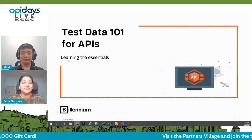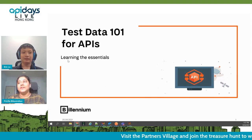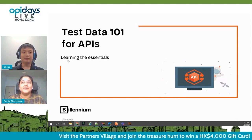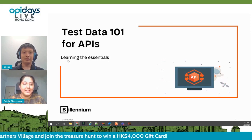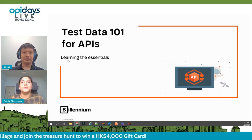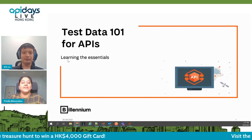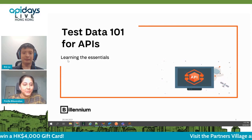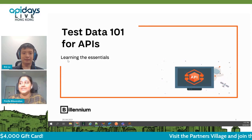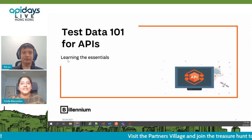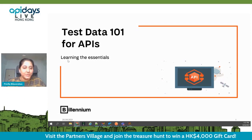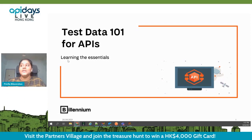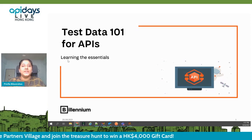So to start off with, we know that test data is one of the underutilized or underspoken topics regarding APIs. When we start to test APIs, we should make sure that the test data has several combinations and we need to have a few checks over the test data, which is more important.